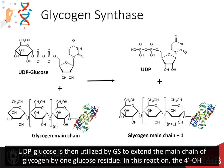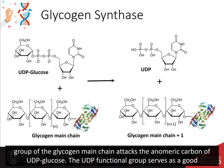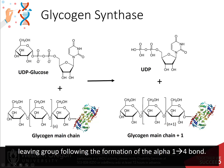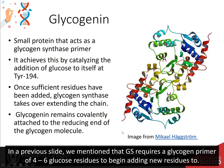UDP glucose is then utilized by glycogen synthase to extend the main chain of glycogen by one glucose residue. In this reaction, the 4' hydroxyl group of the glycogen main chain attacks the anomeric carbon of the UDP glucose. The UDP functional group serves as a good leaving group following the formation of the alpha-1,4 bond. In a previous slide, we mentioned that glycogen synthase requires a glycogen primer of 4 to 6 glucose residues to begin adding new residues to.